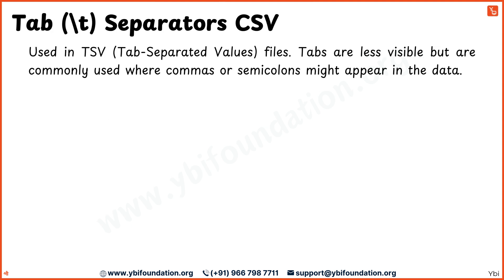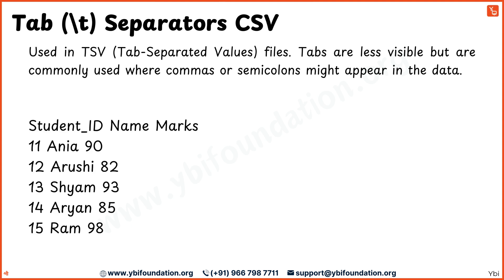Another common format is TSV or tab-separated values, where tabs are used to separate the data. Unlike commas or semicolons, tabs are less visible but very effective, especially when the data itself might contain commas or semicolons. Here's an example of a TSV format: student ID, tab, name, tab, marks. Using tabs helps avoid confusion when dealing with complex data that may already include commas or semicolons.